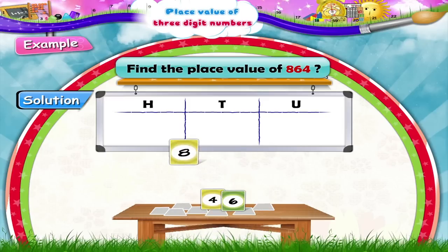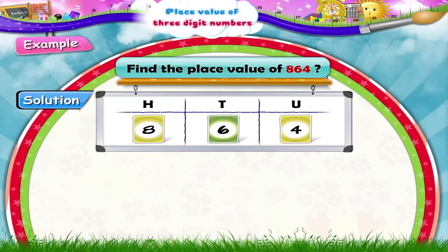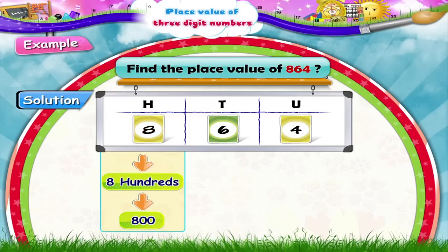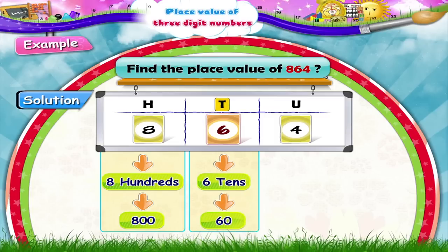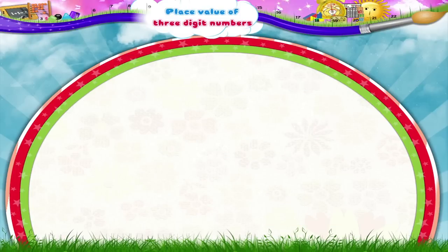Let us choose three more cards. Which digits do we get? Eight is in the hundreds place, six is in the tens place, and four is in the units place. Now let us find out their place values. What will be the place value of eight, Starry? Eight is the hundreds place digit, so its place value is eight hundred. The place value of six is sixty, as it is the tens place digit. And the place value of four is four.